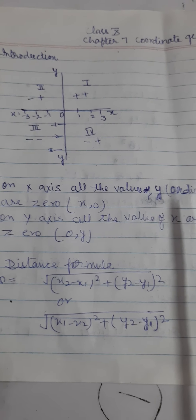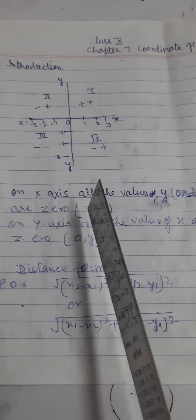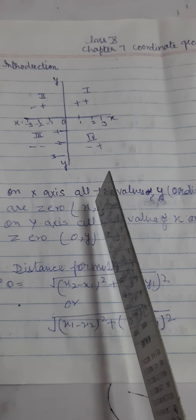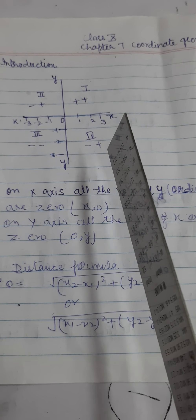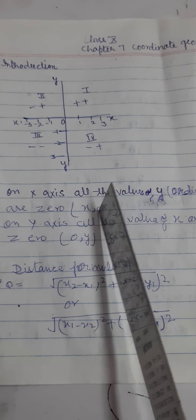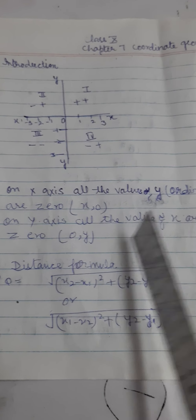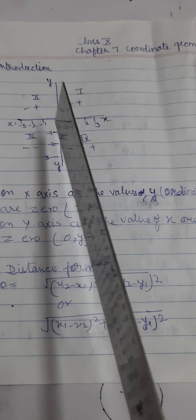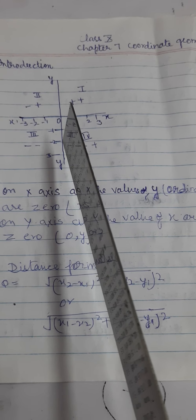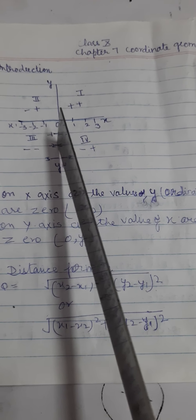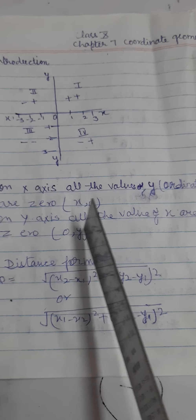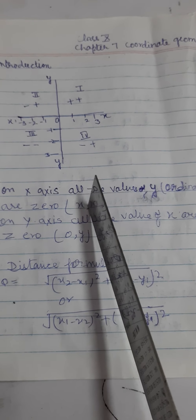On the x-axis, all the values of y will be 0, and therefore the coordinate of any point will be (x, 0) — the x value can be 1, 2, 3, -1, -2, -3, whatever position the point is at, y will remain 0. Similarly, on the y-axis, all the values of x will be 0. If any point lies on the y-axis, the ordinate can be 1, 2, 3, -1, -2, -3 depending on the position. For example, point P on the y-axis has coordinate (0, -2).